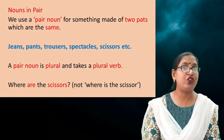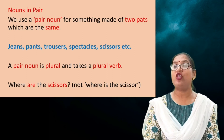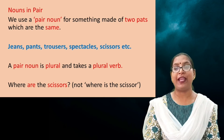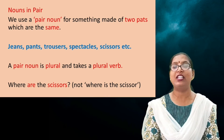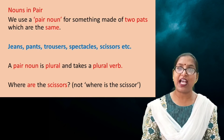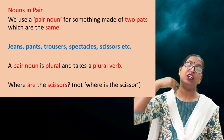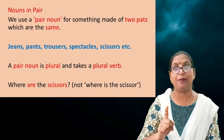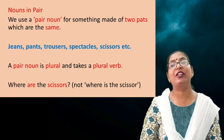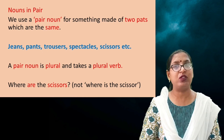An important point to remember is nouns in pairs. We use a pair noun for something made of two parts which are the same. For example: jeans, pants, trousers, spectacles, scissors — all these have two similar parts. You can see spectacles have two parts. Though this is one spectacle, we use the plural form: we say 'spectacles', not 'spectacle'; 'scissors', not 'scissor'; 'pants', not 'pant'; 'trousers'; 'jeans'.